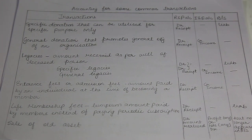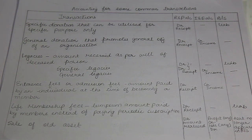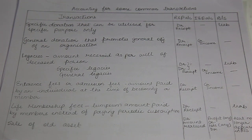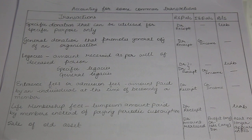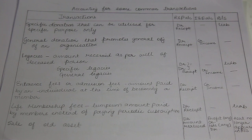We started with not-for-profit organizations. In the first tutorial, we saw that not-for-profit organizations are not made with the purpose to earn profit. Therefore, they are not required to prepare trading account and profit and loss account. We also saw that receipts and payments account, income and expenditure account, and balance sheet are the three statements which not-for-profit organizations will be maintaining.